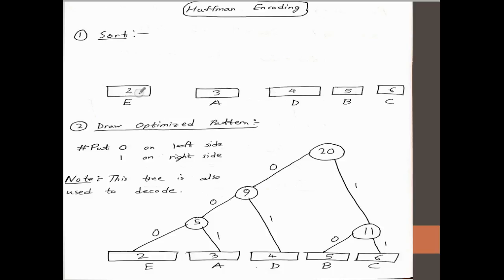So E has the lowest frequency, it's 2. Don't look below. A has a frequency of 3, then 4, 5, and 6. Now we are going to draw an optimized pattern from this.